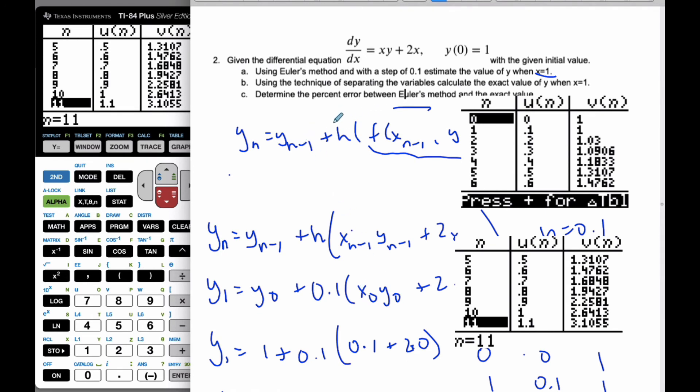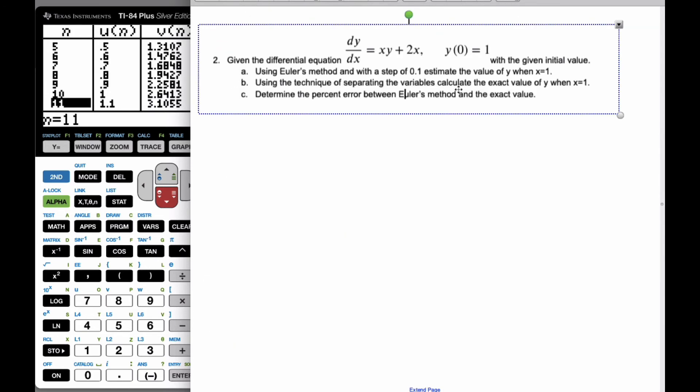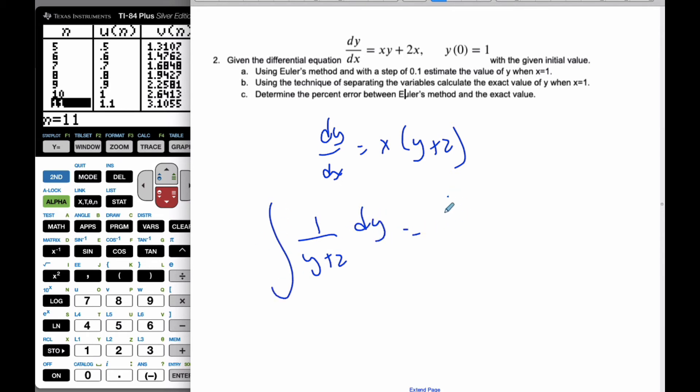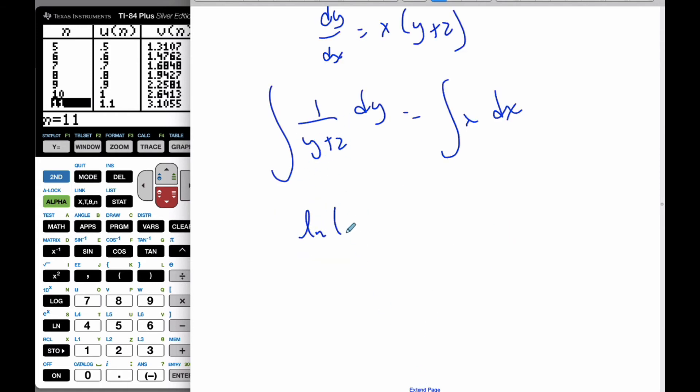Now, I want to do the same method, but separate it and find the exact value. So if I want to find the exact value now, I have to separate my variables. So dy dx, if I pull out my x, I get y plus 2. And I'm going to divide by y plus 2 dy, and it'll be x dx. And so when I take the integral of that, I get ln y plus 2 is equal to 1 half x squared plus c.